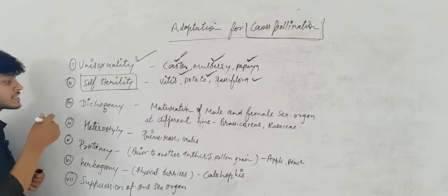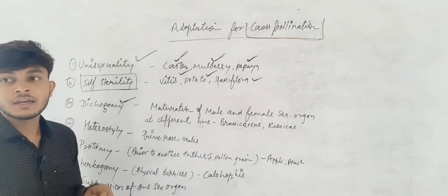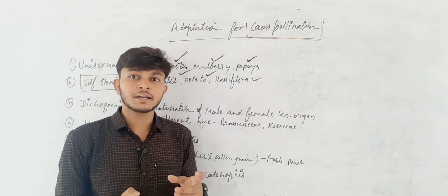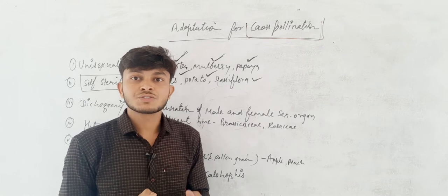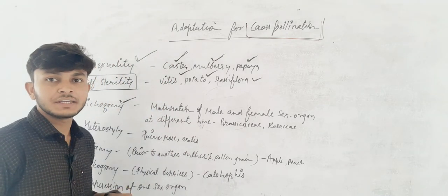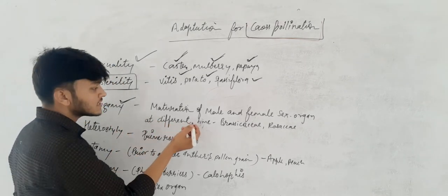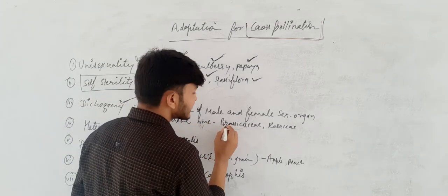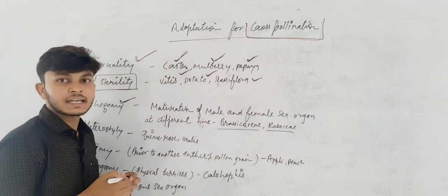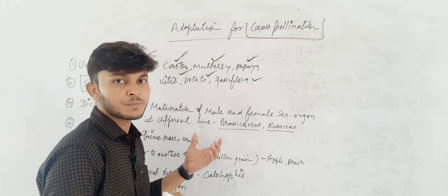Next is dichogamy. Dichogamy means the maturation of sex organs at a different time period. If sex organs mature at different times, that is known as dichogamy. This is basically found in Brassicaceae and Rosaceae.